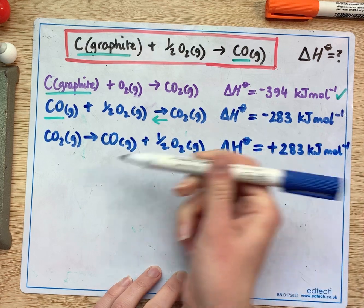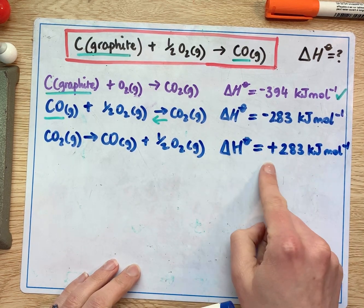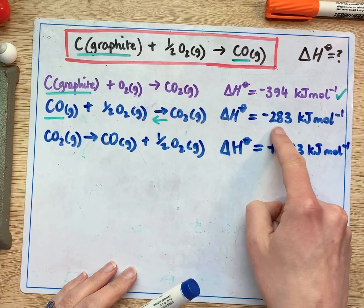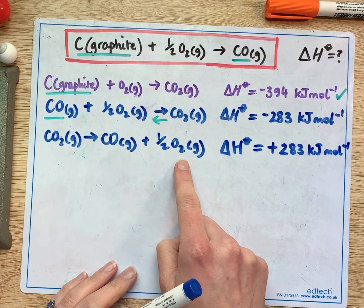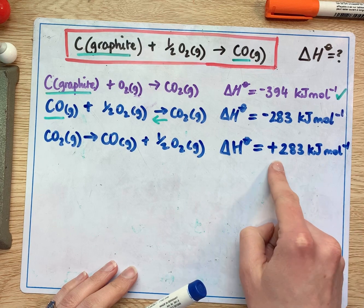So if you reverse the order of the equation you reverse the sign on the enthalpy value because if we are forming carbon dioxide this is how much energy is given out but if we're using carbon dioxide to make these products instead it's the same amount of energy that's used to drive the reaction.